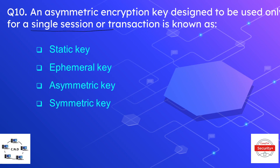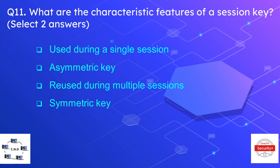Question number ten: an asymmetric encryption key designed to be used only for a single session transaction is known as what? The options are static key, ephemeral key, asymmetric, and symmetric key. The correct option is ephemeral key. Question number eleven: what are the characteristic features of a session key? Select two answers. The options are used during a single session, asymmetric key, reused during multiple sessions, or symmetric key.